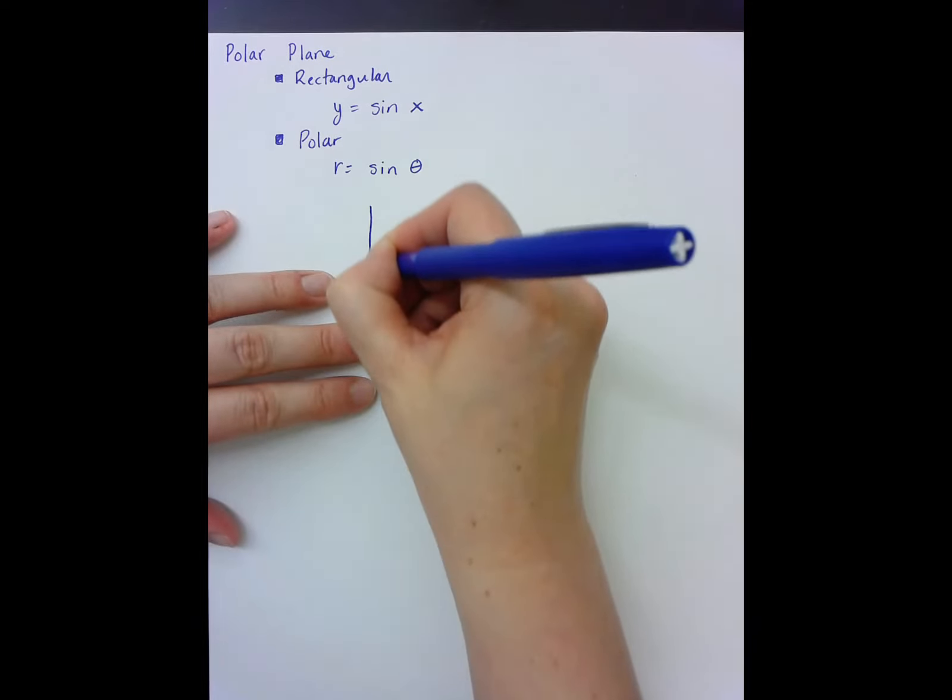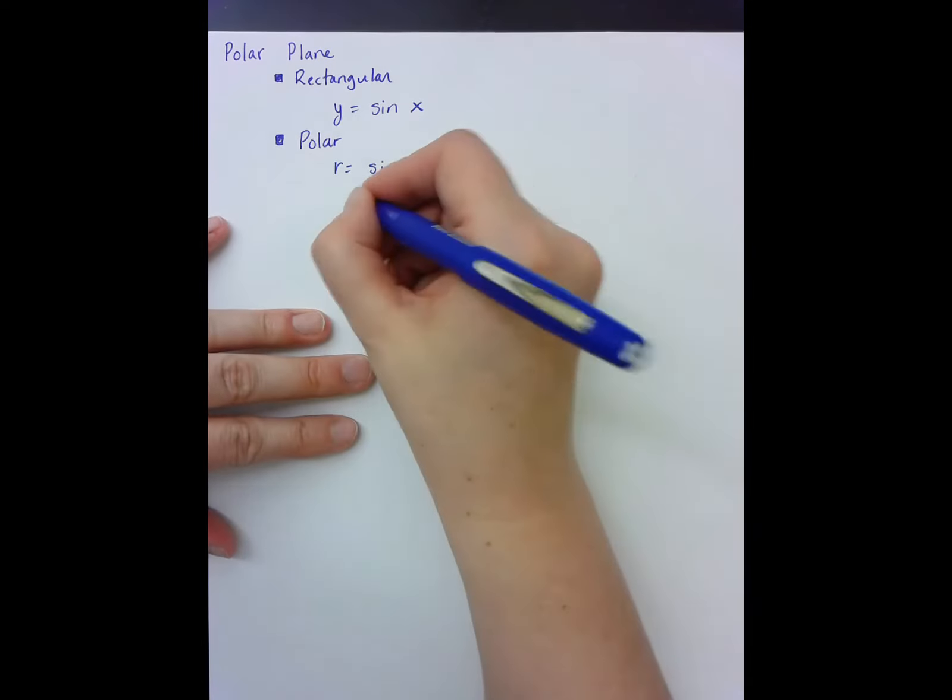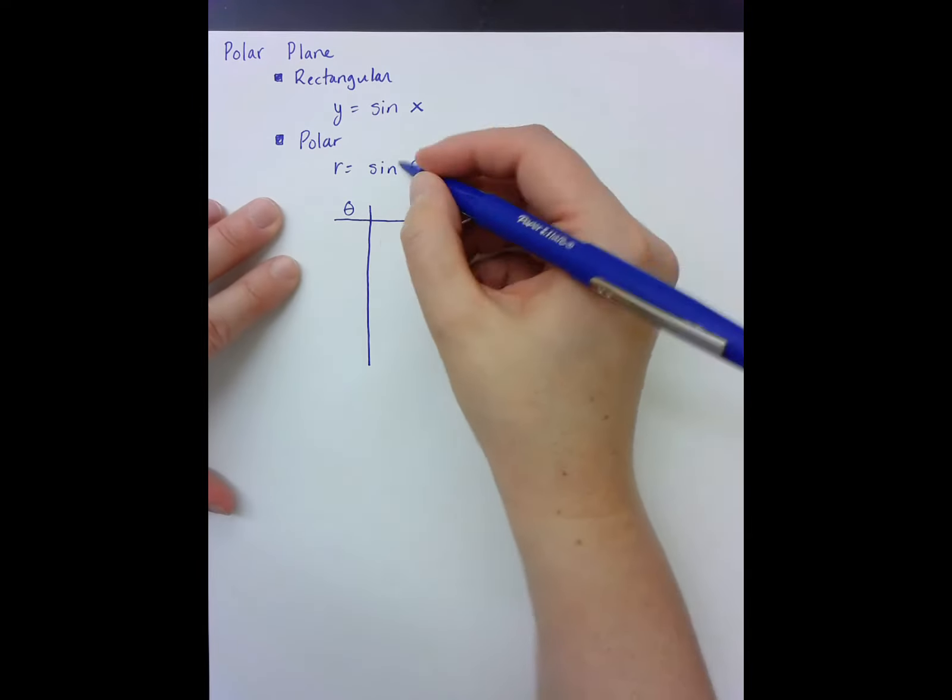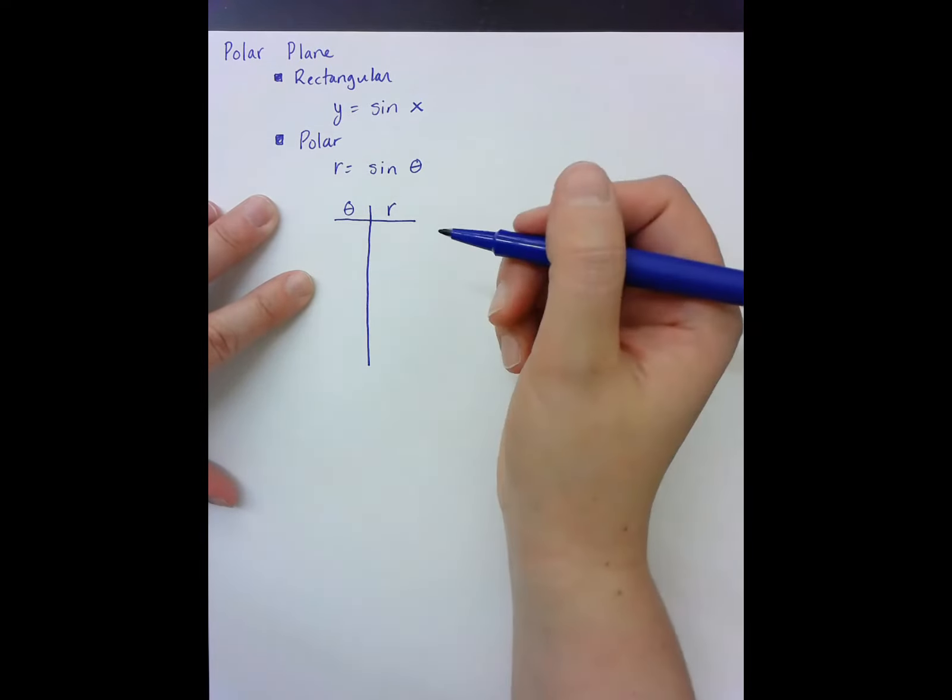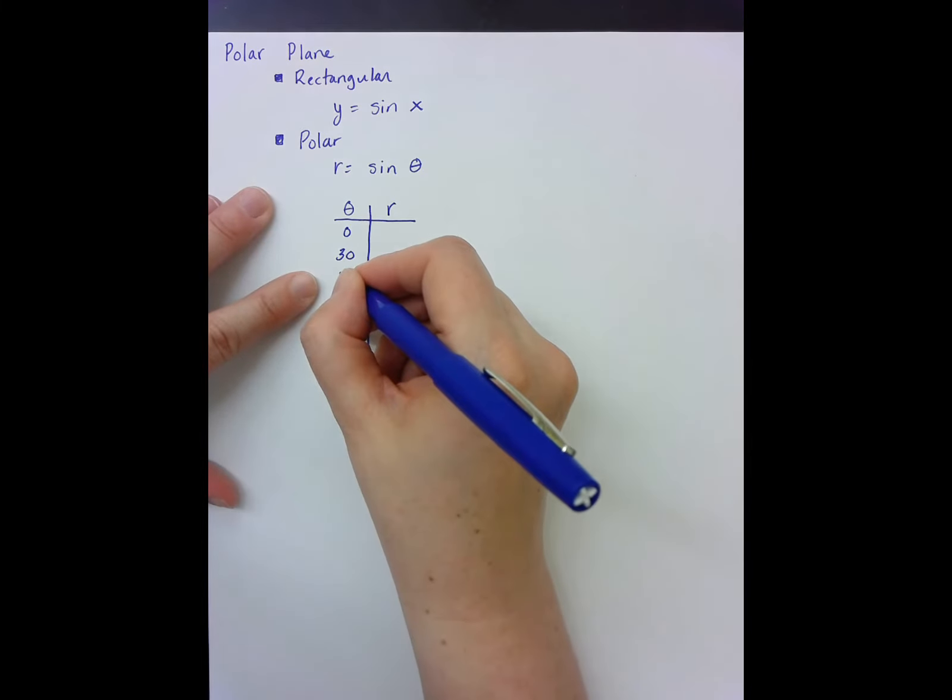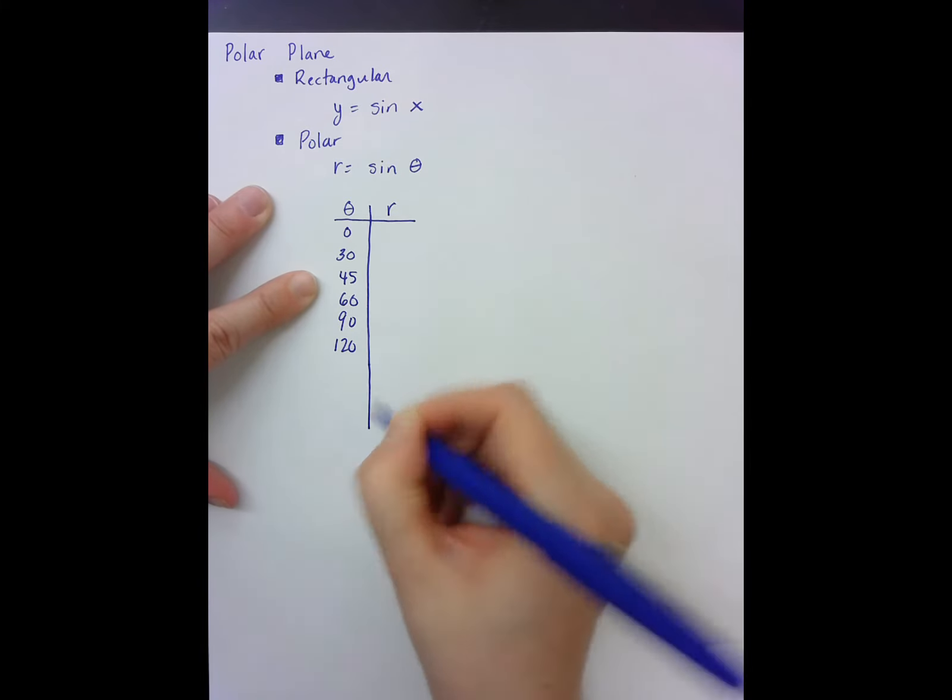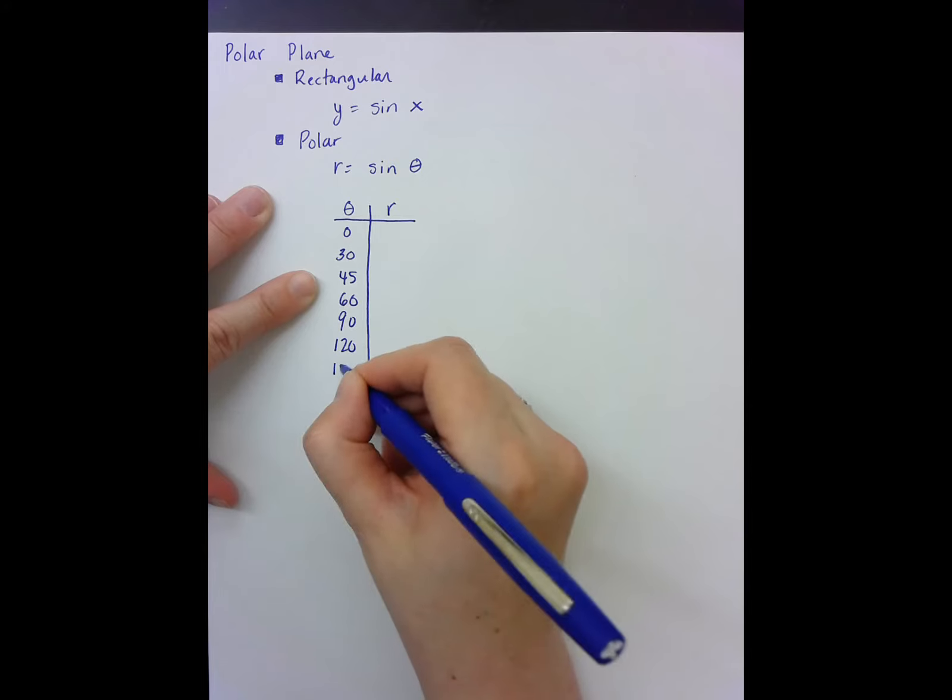If I make a table here, my input is theta and my output is r. I use degrees and we'll graph this up to 180.